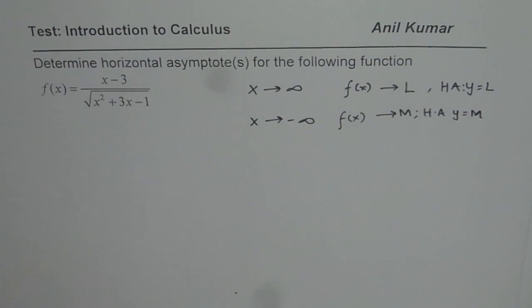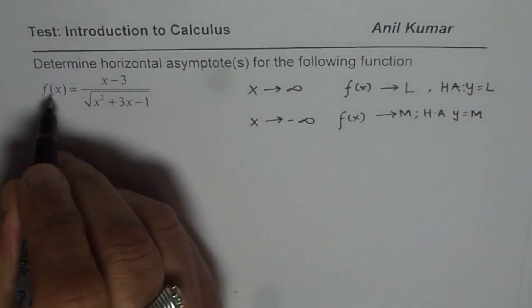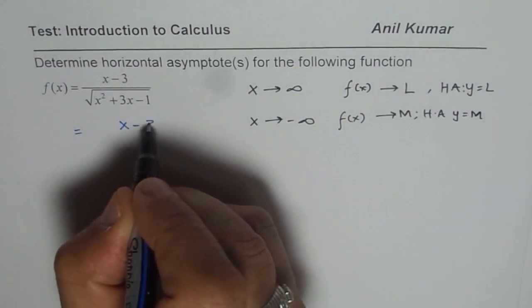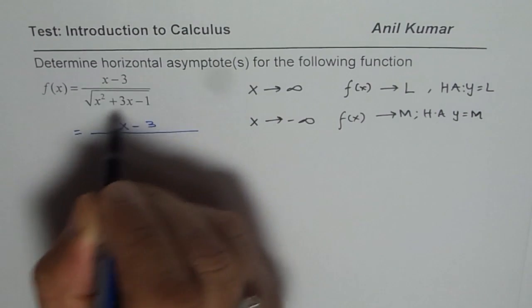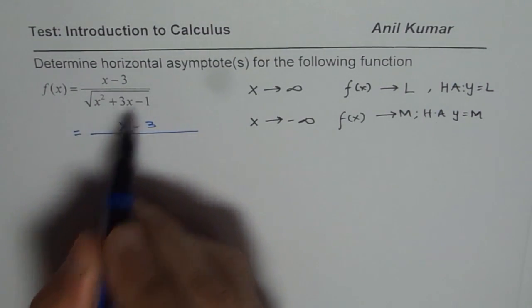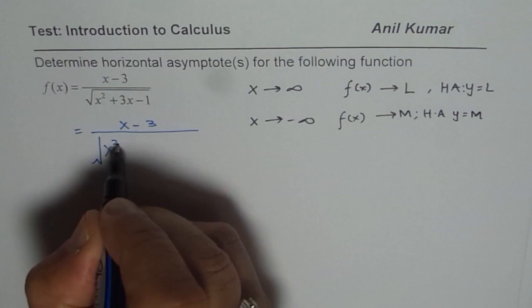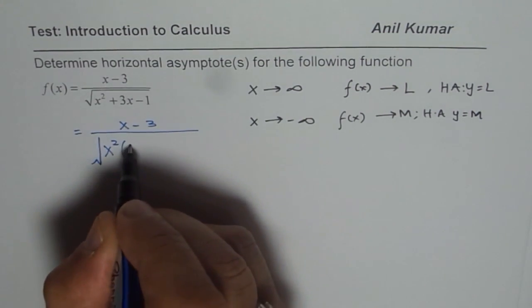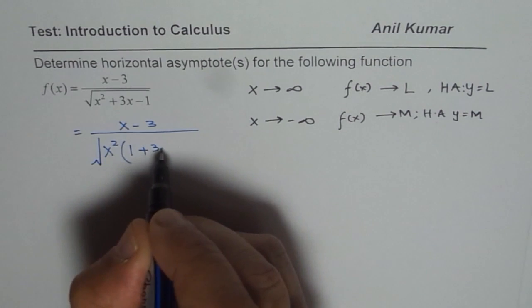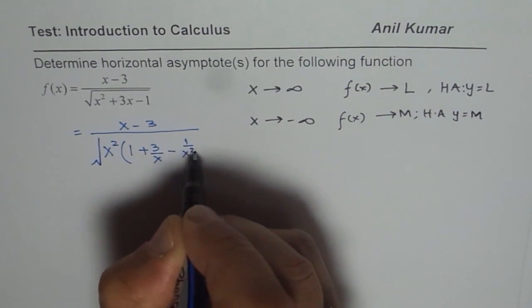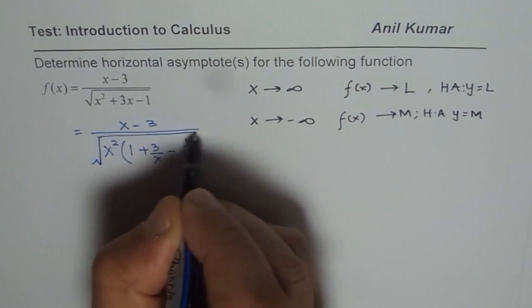Let's begin solving the question. We are given f(x) equals x minus 3 over the square root of x squared plus 3x minus 1. What I will do is factor out x squared from inside the square root, which gives 1 plus 3 over x minus 1 over x squared under the square root.